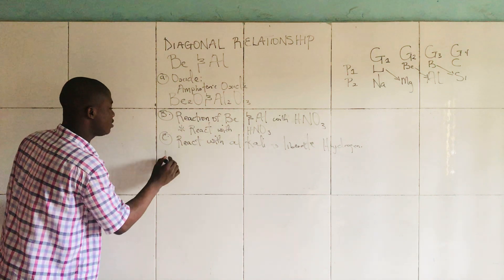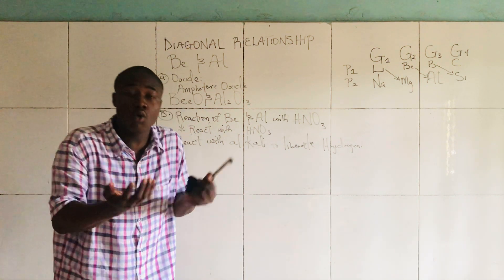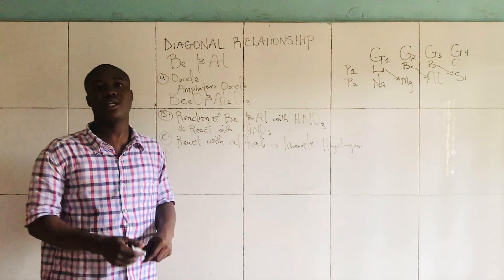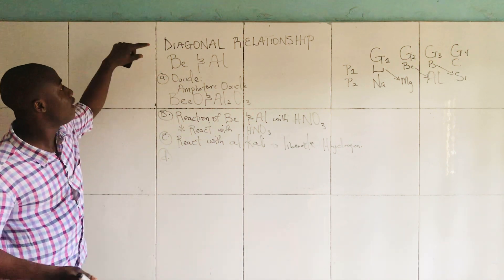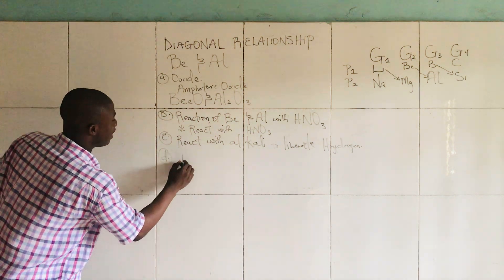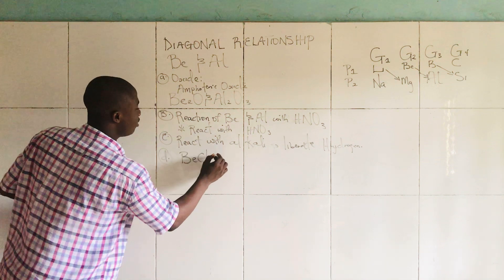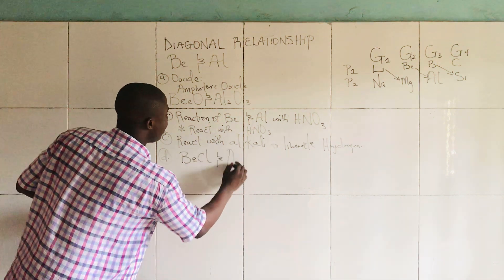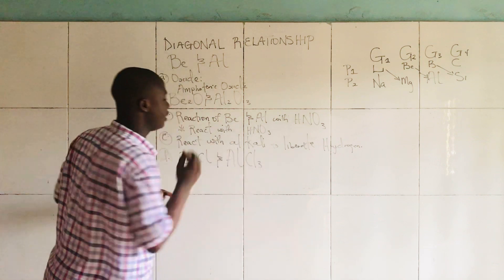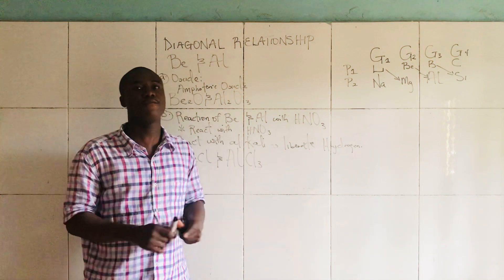The last concept relating to Beryllium and Aluminium is that their chlorides are electron deficient. The chlorides of Beryllium and Aluminium, such as BeCl₂ and AlCl₃, are electron deficient.